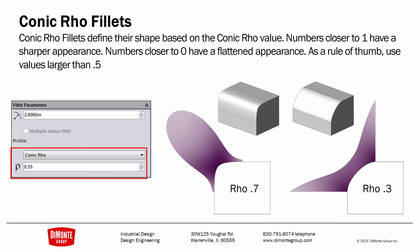Here we can see the differences of the conic Rho factor. The higher the conic Rho — and it ranges between almost 0 and almost 1 — the more it pushes the fillet out, punching it out more with a higher Rho value.